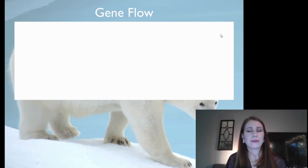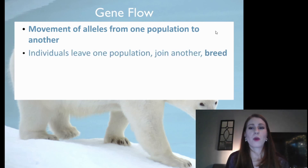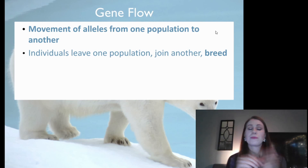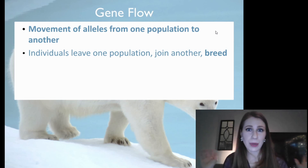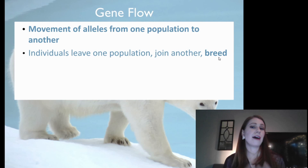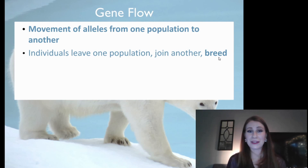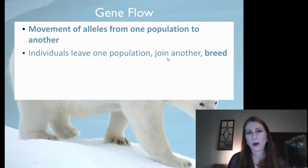Gene flow is another mechanism of evolution. It's the movement of alleles from one population to another — also called migration. For this to happen, an individual has to actually breed in the new population. Let's say a cow loses its herd, wanders off, crosses a river, and joins another herd. That's not gene flow yet. Just because an organism moves from one population to another doesn't mean it's gene flow. They have to have offspring in the new population, because the alleles have to get transferred. When that cow joins the other herd and has cow babies, that's when we experience gene flow.